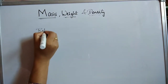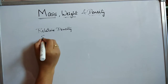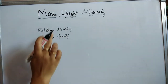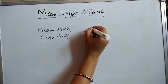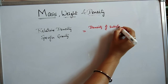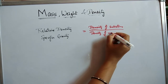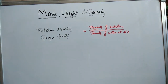Next we will see what is relative density. It is also called specific gravity. Relative density or specific gravity is the ratio of the density of any substance to the density of water at 4 degrees Celsius.